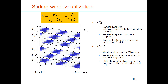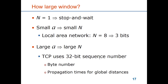So how large should the window be? If n equals 1 we have stop-and-wait. For a small 'a' — meaning a link with few frames outstanding between sender and receiver — we can use a small n. For local area networks we maybe use a sending window of 8 frames, meaning 3-bit sequence numbers. For a large 'a' we correspondingly need a large n. TCP at the transport layer uses 32-bit sequence numbers — not directly comparable since they indicate byte numbers rather than frames — but this reflects the need for large sequence numbers when distances are global, including paths over geostationary satellites.